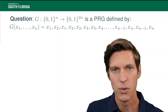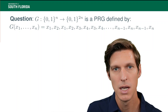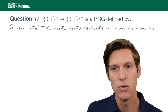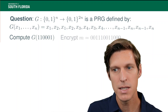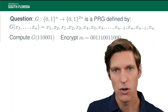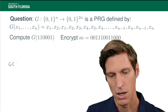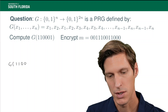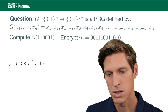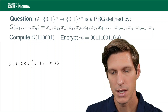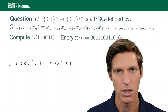Before we move into calculating the security, or formally establishing there is no security beyond just a simple intuition that there is an identifiable pattern, I will ask: can you calculate the output of the pseudorandom generator on a certain input? For example, 110001. So calculating G(110001): all we do is repeat the digits pair by pair. So 11 repeated becomes 1111, then 00 repeated becomes 0000, and then 01 repeated becomes 0101. That's very simple, as long as we understand the definition of the pseudorandom generator.